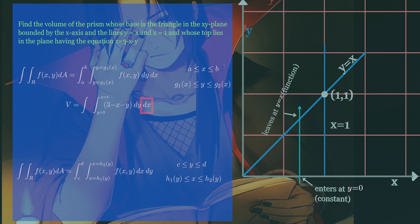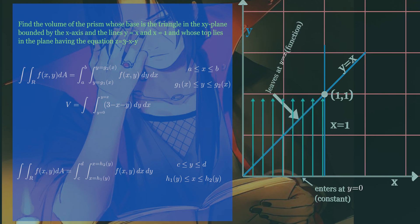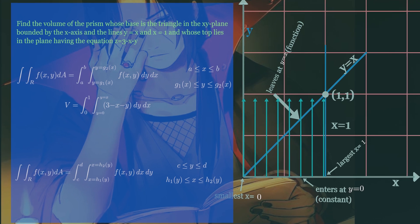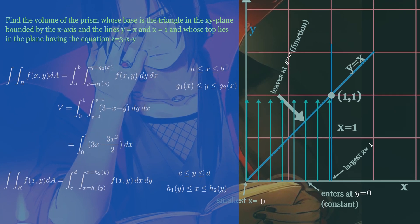For finding x limits of integration, choose x limits that include all the vertical lines on our triangle. Now mark the smallest and largest x. These are the x limits. Finally, solve them to get the volume of the prism.